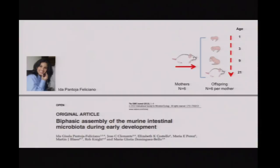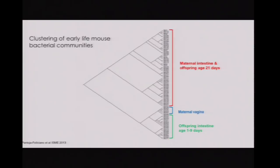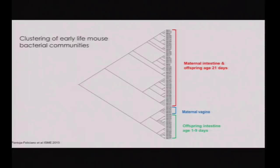Ida Pantoja, my former student at the University of Puerto Rico, studied six mothers and six offspring during days one to twenty-one of development — the weaning time in mice. In the cluster analysis we see two branches: one with maternal vaginas and feces of offspring from day one to day nine, clustering with vaginal communities; and another with offspring feces at day 21 and the mothers.